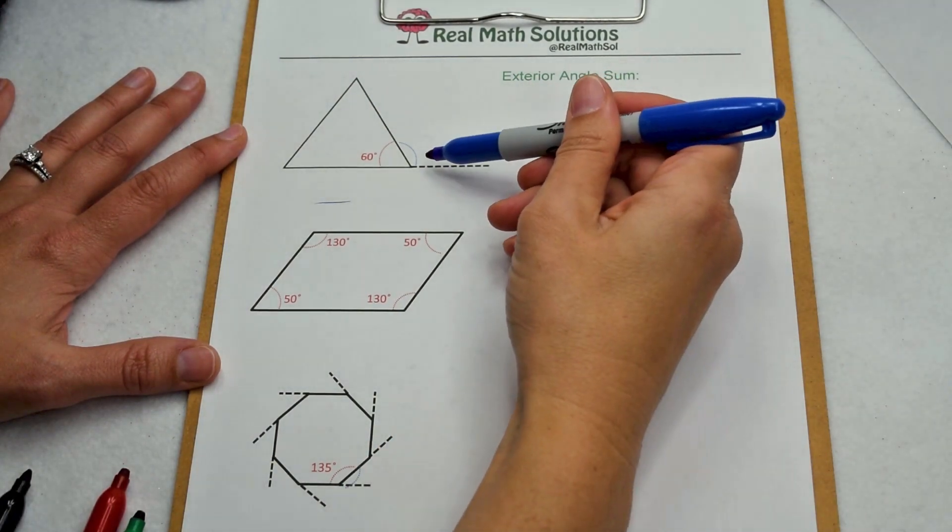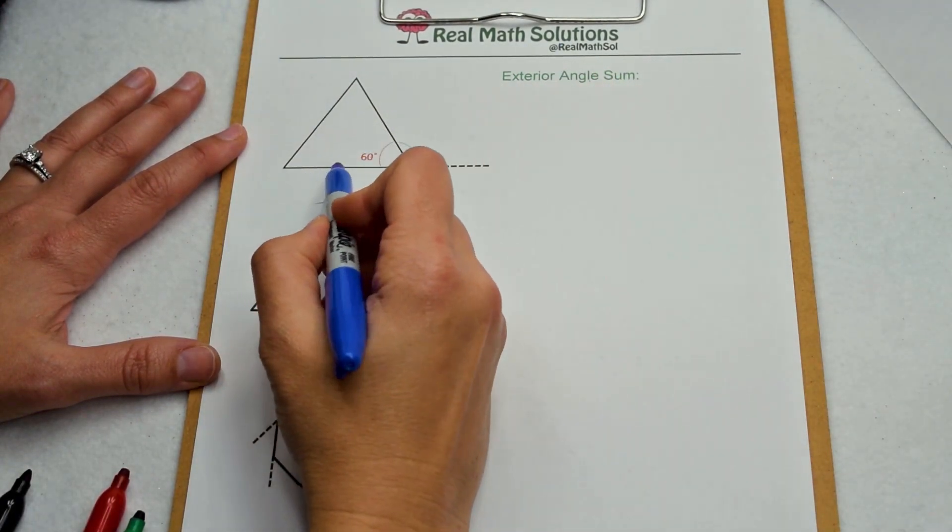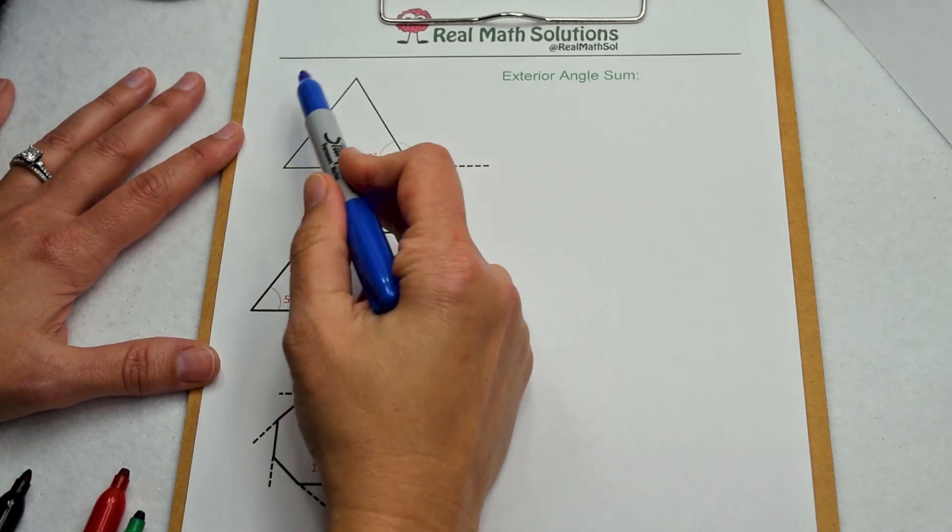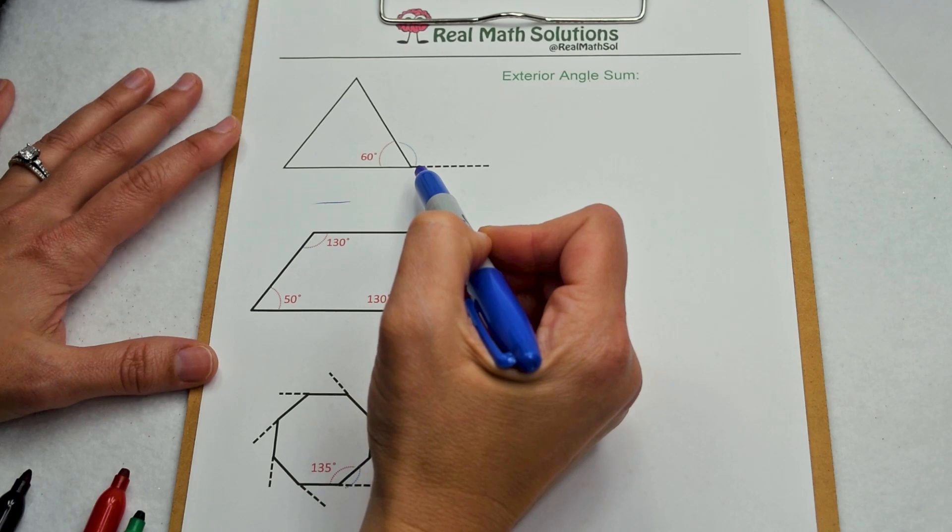Exterior angles are the angles on the outside of a polygon. They can be formed by extending the edges of our polygon. When we take these exterior angles and combine them, we can use them to find the exterior angle sum of any polygon.